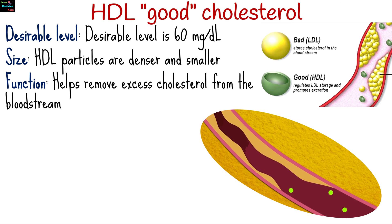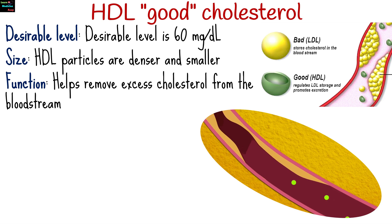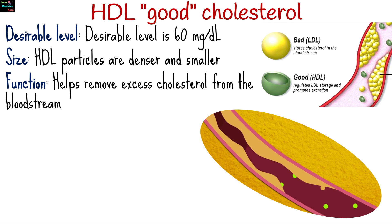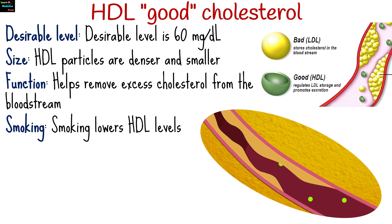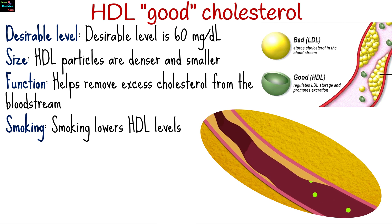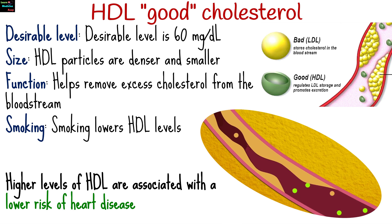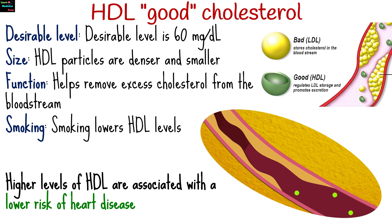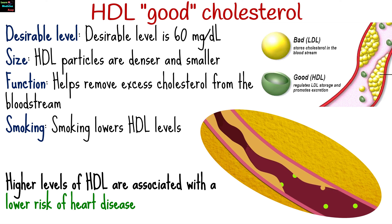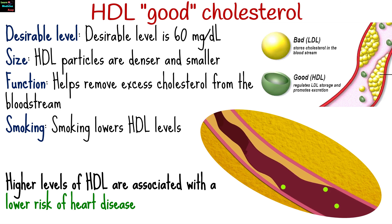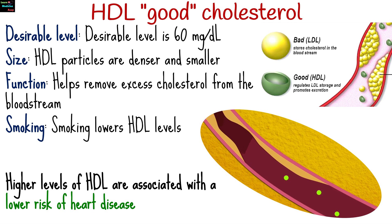HDL helps remove excess cholesterol from the bloodstream by transporting it to the liver, where it can be broken down and excreted. Smoking lowers HDL levels. Higher levels of HDL are associated with a lower risk of heart disease because it helps prevent the buildup of plaque in the arteries by removing excess cholesterol.